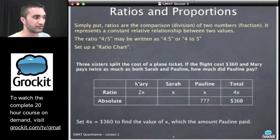So in this situation, three sisters, Mary, Sarah, and Pauline split the cost of the plane ticket. If the flight costs $360. So if we put this information into our box, we get, it's the actual value. So we're going to put it in the absolute row. This is the actual value. And Mary pays twice as much as both Sarah and Pauline. So if we say Sarah spent X and Pauline spent X, Mary spent twice that amount. Great. So Mary, the ratios are Mary has 2X, Sarah has X, Pauline has X, and the total is 4X equals $360.